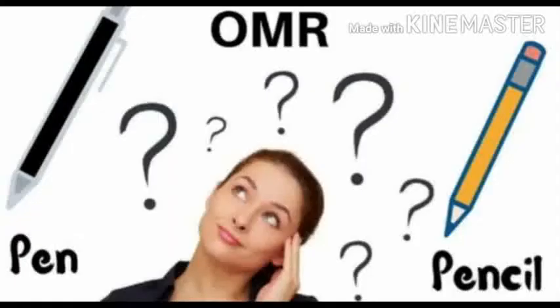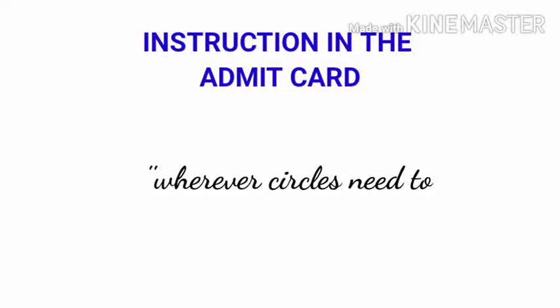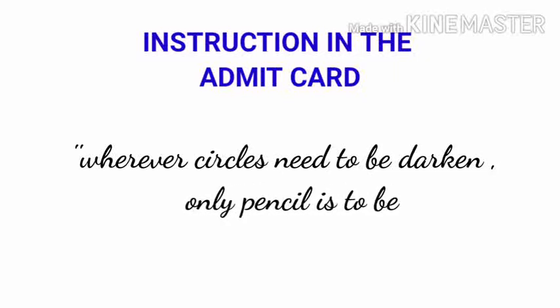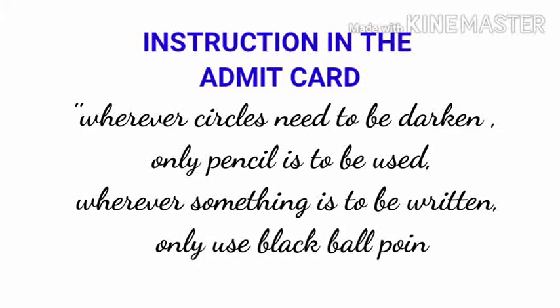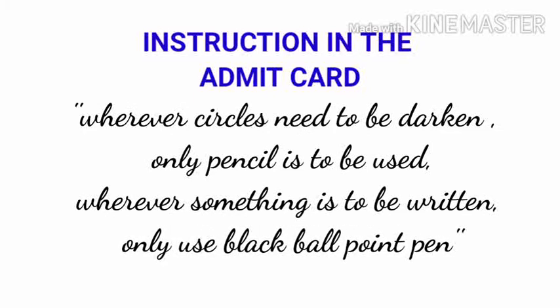Many students have the question of whether to use a pen or pencil on the OMR sheet. Instructions regarding the use of the OMR sheet are given clearly in the admit card. Wherever circles need to be darkened, only a pencil must be used. Wherever something has to be written — such as your roll number, paper code number, or question booklet number — use a black ballpoint pen. Use a pencil to answer your questions.